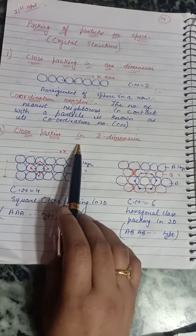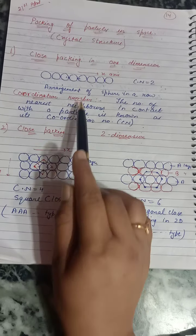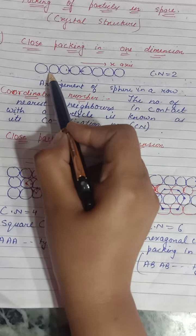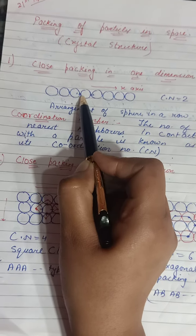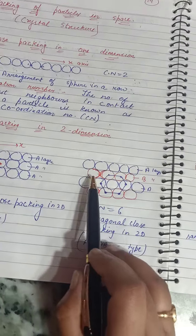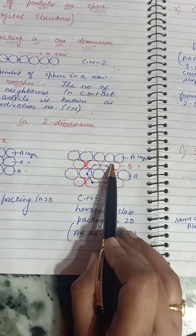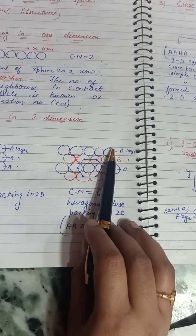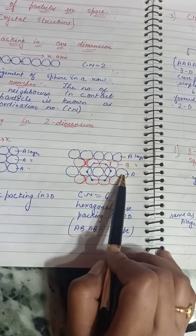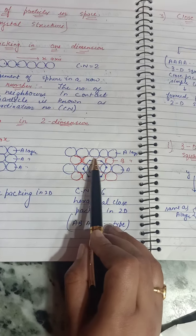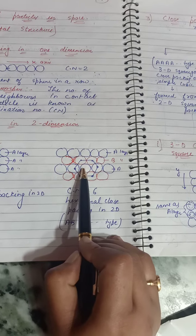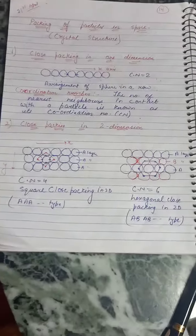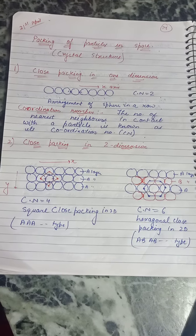The other way to do close packing in two dimensions is to use the dispersion — the space between the spheres. We place the second layer just below the dispersion of the first layer. Then the third layer is placed below the dispersion of the second layer, which turns out to be identical to the first layer. Each particle is surrounded by six particles, giving a coordination number of six.